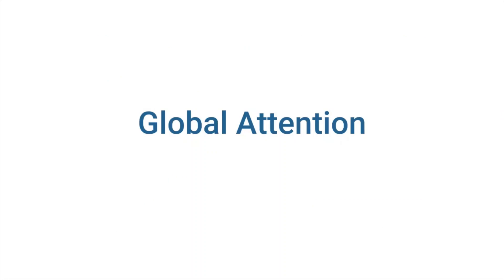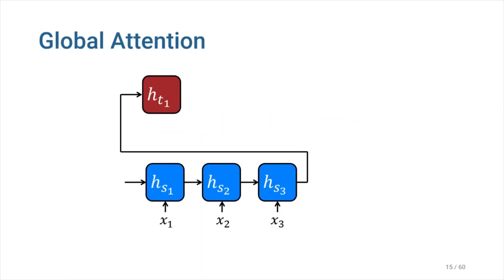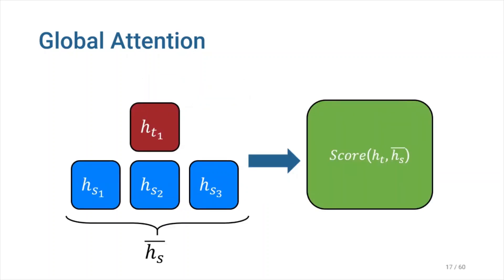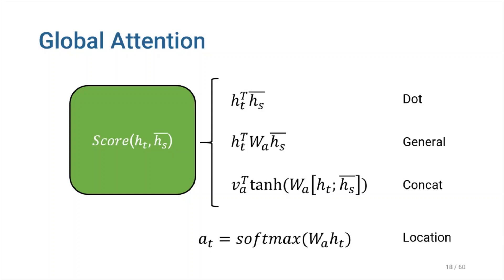Chapter 2: Global Attention. Let's say that we have x1, x2, and x3 as our inputs and have calculated the first output token. Now, how can we calculate the second target hidden state using the global attention approach? We should take the current hidden state and every source hidden state and fit it into a score function. The idea behind the score function is to measure the similarity between two vectors. The idea is to let the model learn the alignment weights together with the translation. Using the score function allows our model to selectively concentrate on helpful parts of the input sequence and thereby learn the alignments between them.